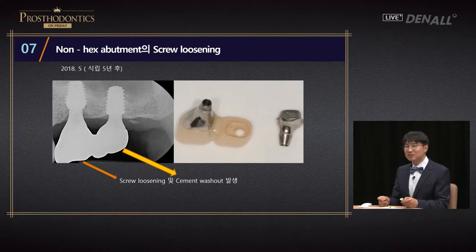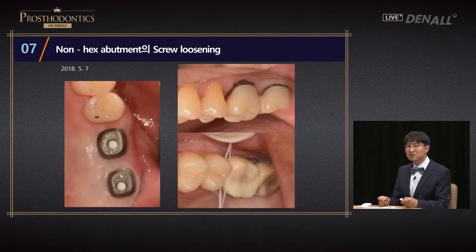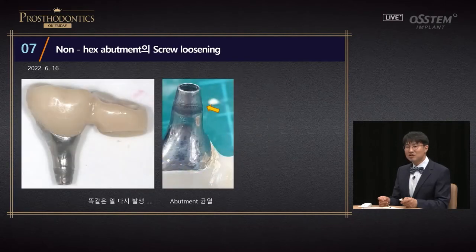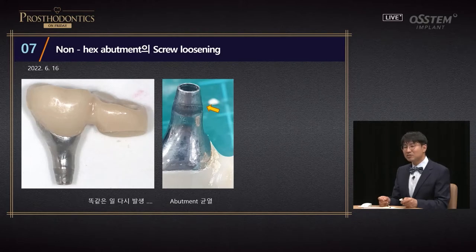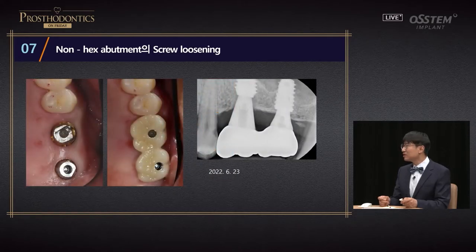Screw loosening and cement washout occurred 5 years after placing the implant. It was mobile, so I refabricated the prosthesis and attached it. I adjusted the contact, and 2 months later there was screw loosening once again in February 2022. In June, the same thing occurred, and when I observed it closely, the abutment was fractured. I've used non-hex abutments for the past decade really a lot, and this was the only case where screw loosening occurred. I don't think just because you use non-hex abutments screw loosening occurs, but you need to do re-tightening properly after loading.